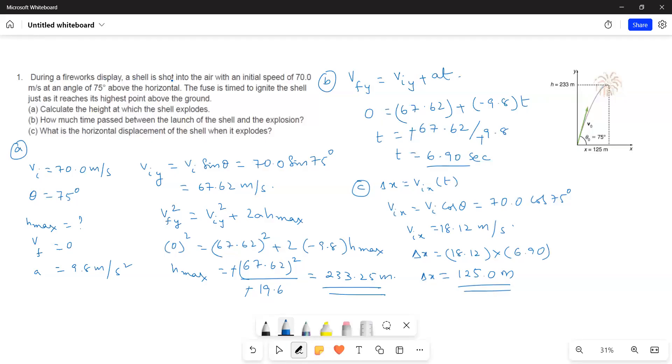During a firework display, a shell is shot into the air with an initial speed of 70 m per second at an angle of 75 degrees above the horizontal. The fuse is timed to ignite the shell just as it reaches its highest point above the ground.